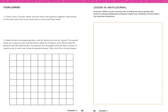Challenging part, number 1: If Jenna, Omar, Yusuf, Nadia, and Aya all put their gardens together, what is the total area? We add all previous areas: 18 + 21 + 16 + 12 + 40 = 107 square units. So they need 107 square units for the total garden.